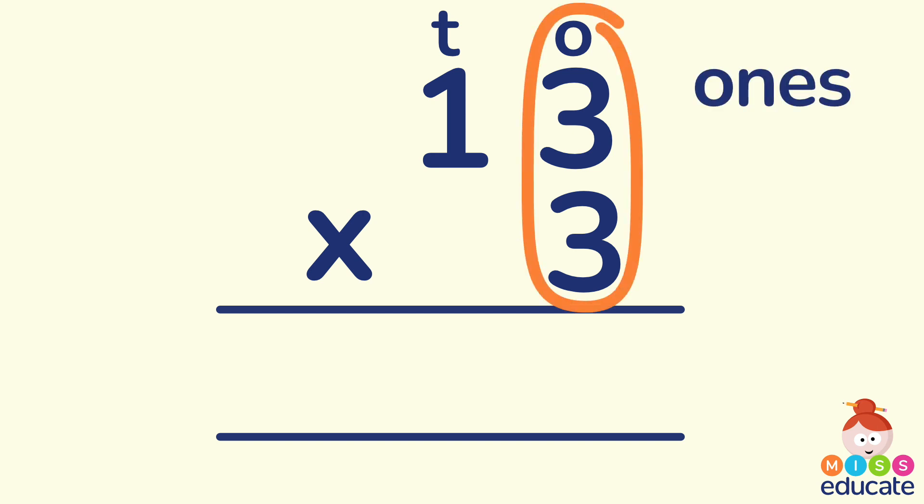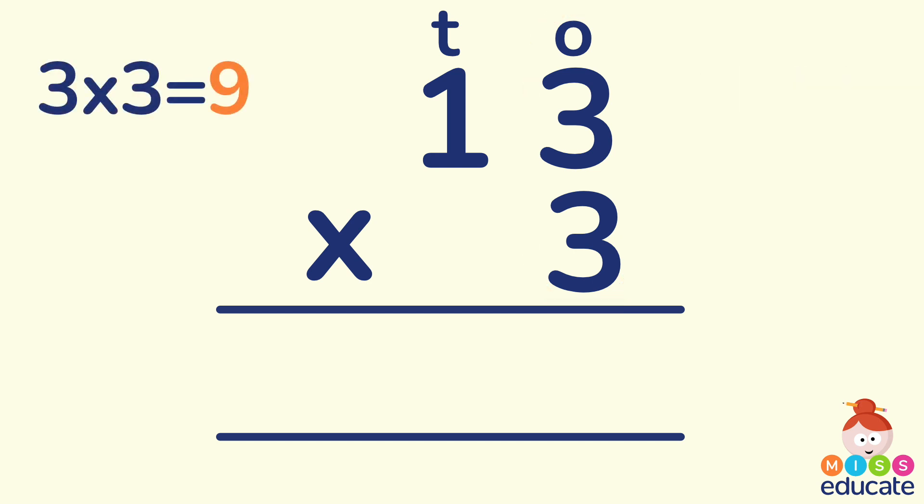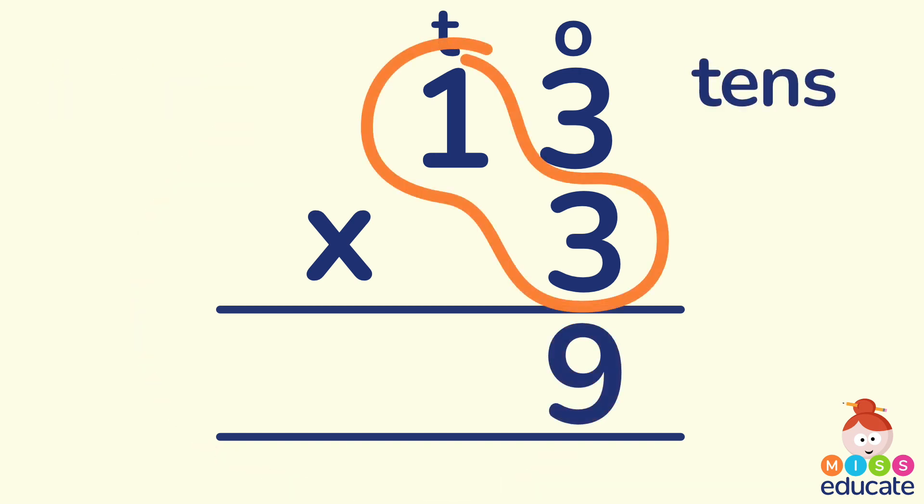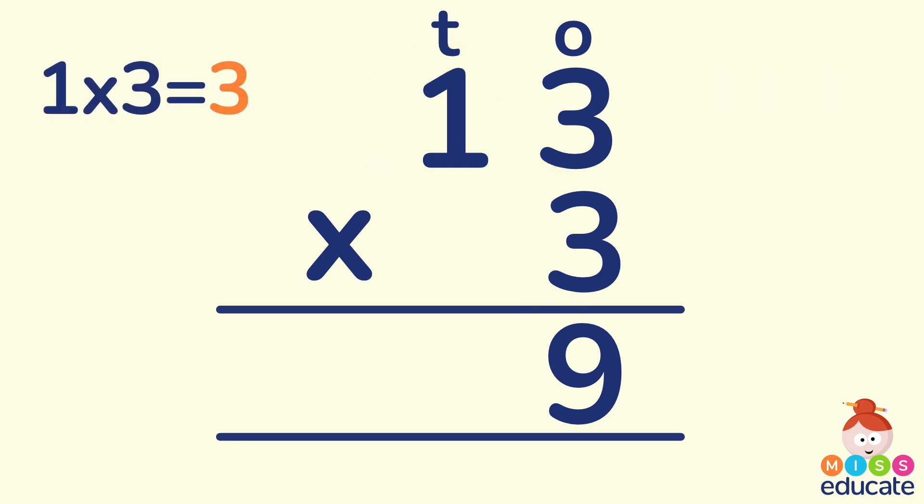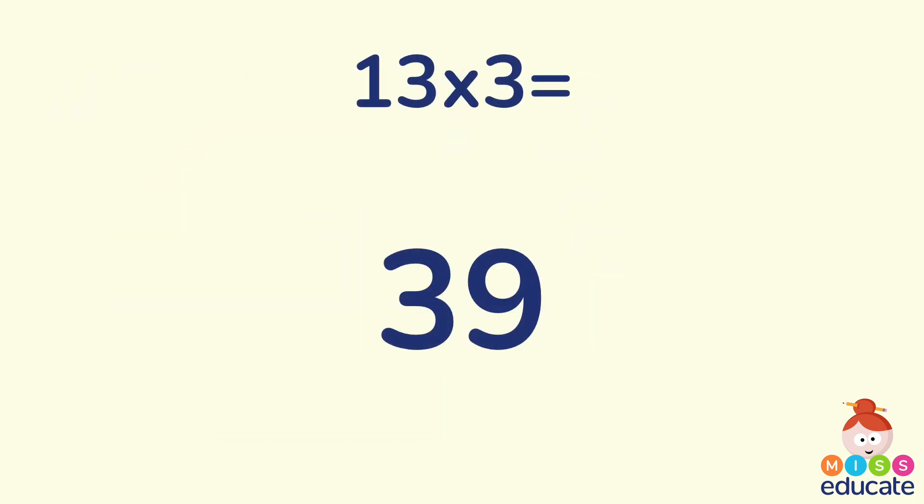First step we must multiply those ones. And so that sum will be 3 times 3. And that 9 like we did earlier goes in underneath. There it is. What's next? That's correct. We have to multiply our tens. That part is 3 lots of 10. Or for the purposes of short multiplication we're going to do that as 1 times 3. And the 3 goes in in the tens column which of course is also 30. Here then we have our answer. 13 times 3 is 39.